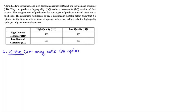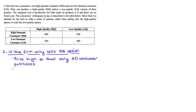Let's think about scenario one — if the firm only sells a high quality option. There are really two ways they could do this. They could price the product high, pricing out the lower demand consumer, so only the high demand consumer purchases. In that case, they would charge $800 for the high quality product (PHQ = 800), which is the maximum willingness to pay of the high demand consumer.